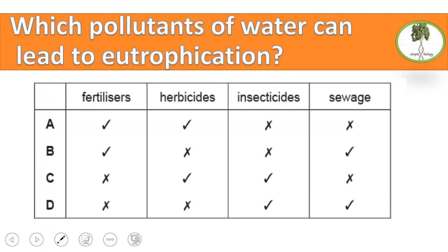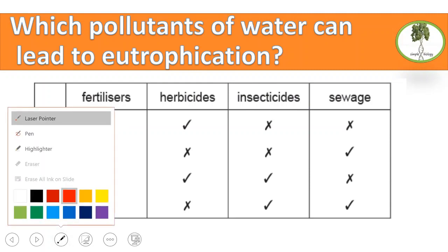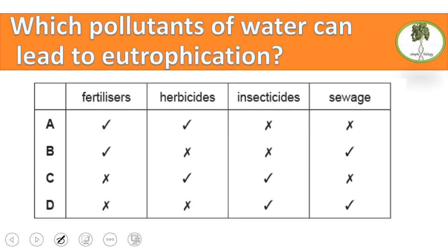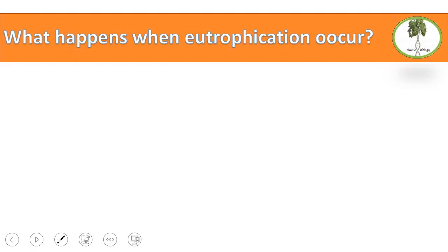Which pollutants of water can lead to eutrophication? If you were following along, you would know the answer. I mentioned clearly that fertilizers cause eutrophication, and I mentioned clearly that sewage causes eutrophication as well. So the answer is B. Now, what happens when eutrophication occurs?